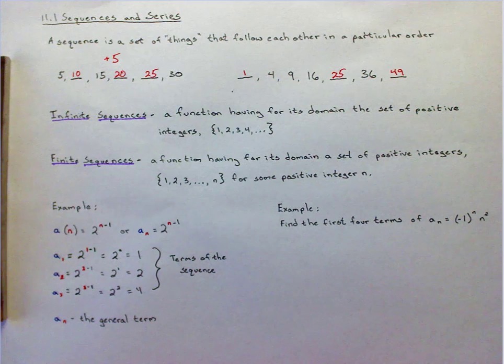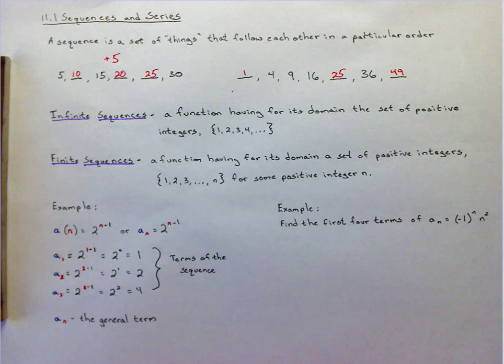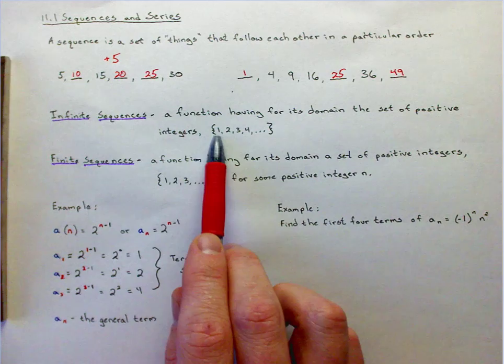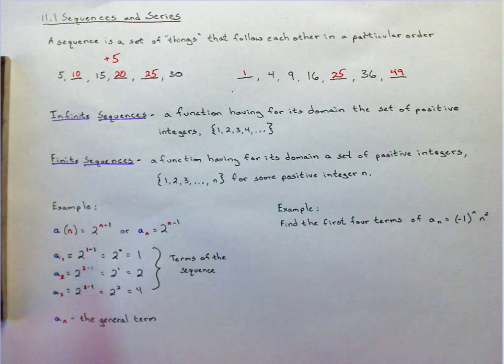Well, the thing about sequences and series is it's really an equation that's given that illustrates a pattern that is occurring. And you have two types of sequences: infinite and finite. Infinite means they go on forever, from 1 all the way through.